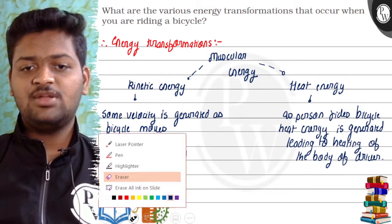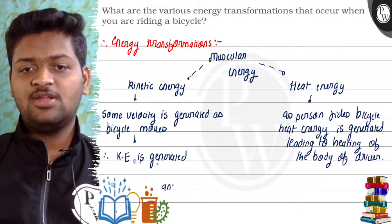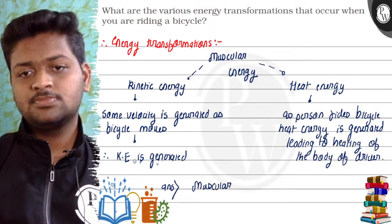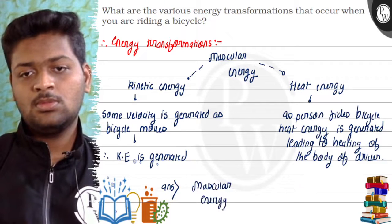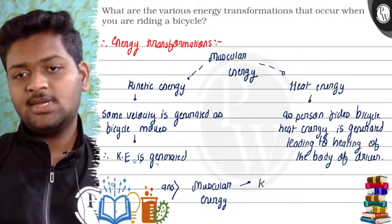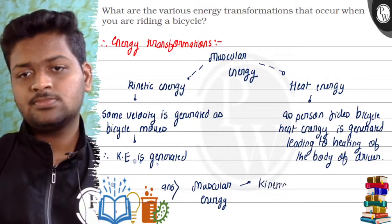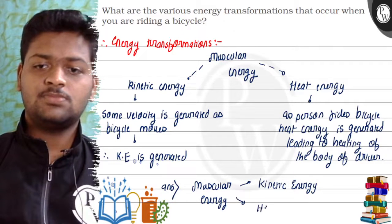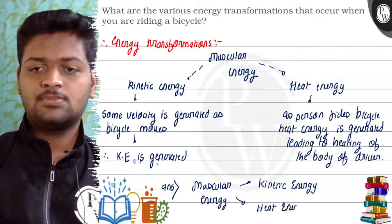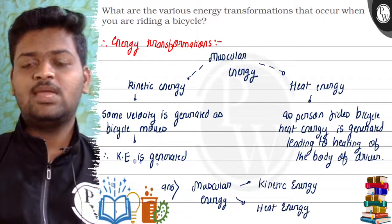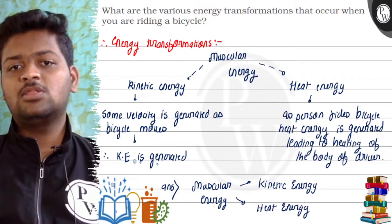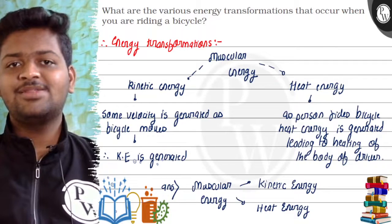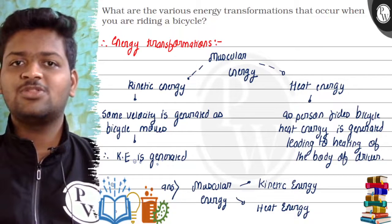So our final answer is: muscular energy is converted into two forms — one is kinetic energy and the other is heat energy. Total mechanical energy is conserved, that is, muscular energy equals kinetic energy plus heat energy. I hope you understood the question. Thank you so much.